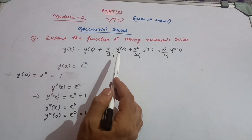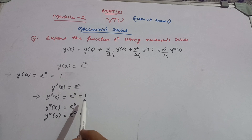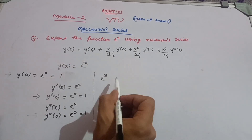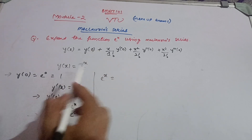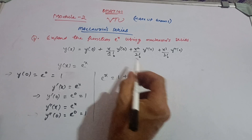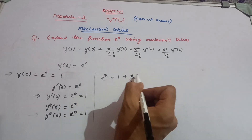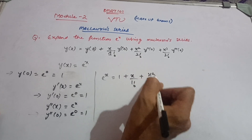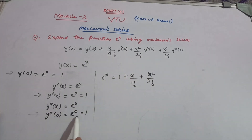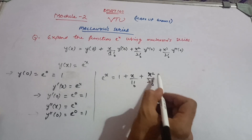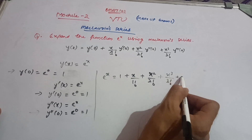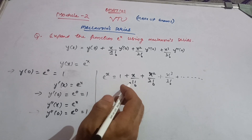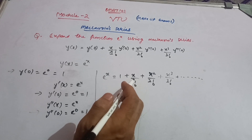So in this problem, y(0), y'(0), and y''(0) are all equal to 1. Now put these values into the Maclaren formula. y(x) = e^x = 1 + x/1! + x²/2! + x³/3! + ... Since each derivative value is 1, there is no need to separately multiply. This series goes on and on — this is your Maclaren series expansion for e^x. It is a very simple problem, my dear friends.